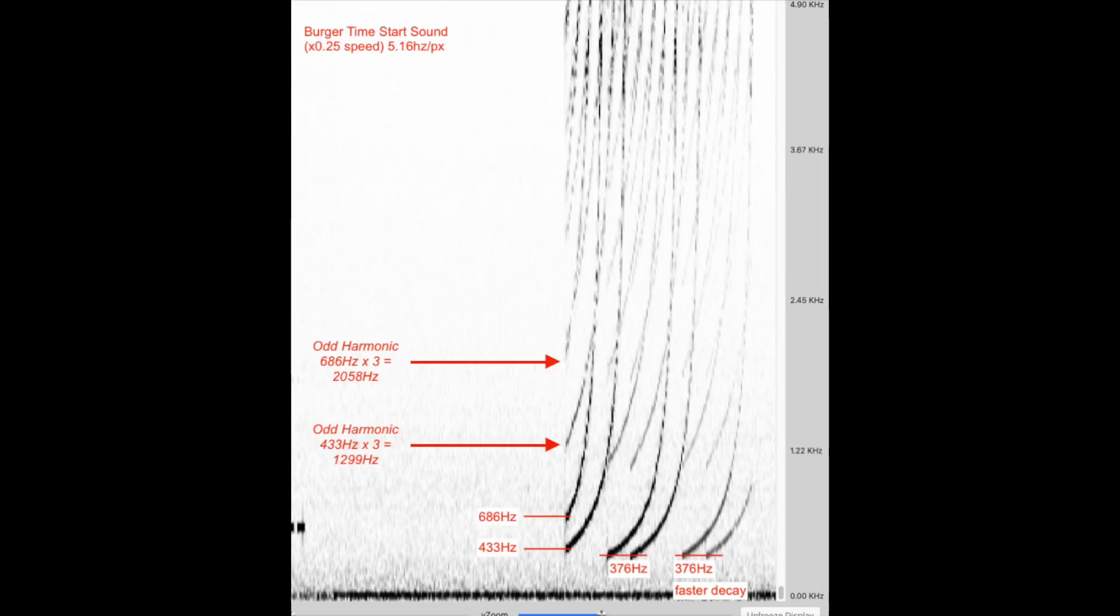Remember our original problem with the appearance of a third harmonic in our BurgerTime chirps? This absence of the second harmonic, and the presence of the third harmonic, indicates that the tone is not a sine wave, but most likely a square wave.